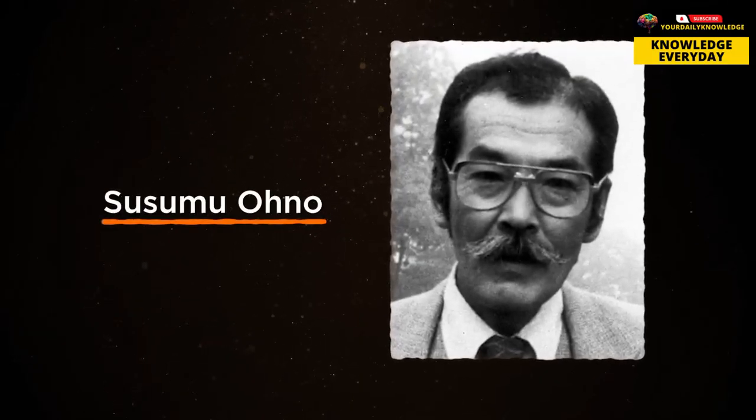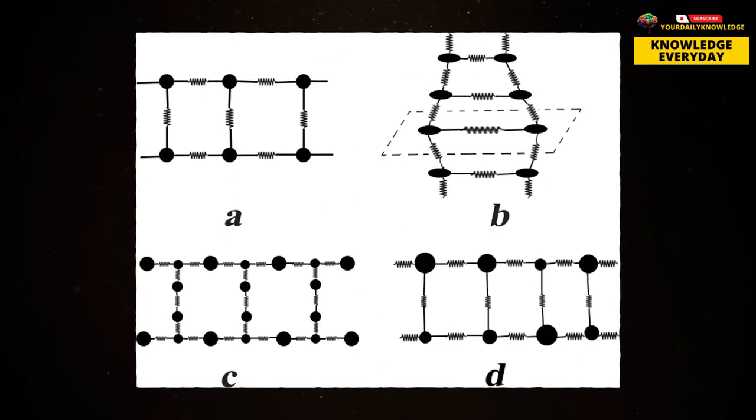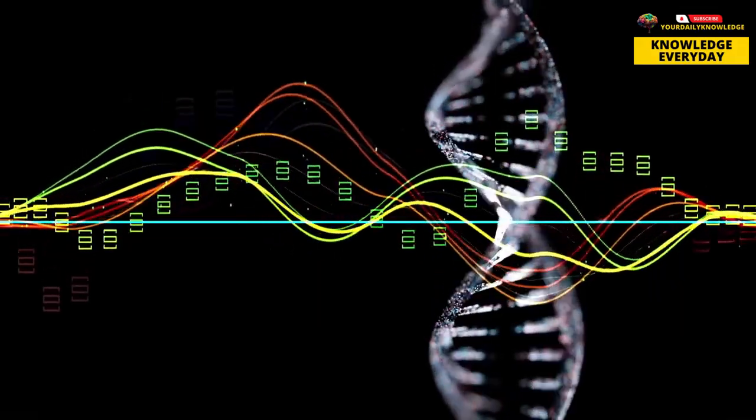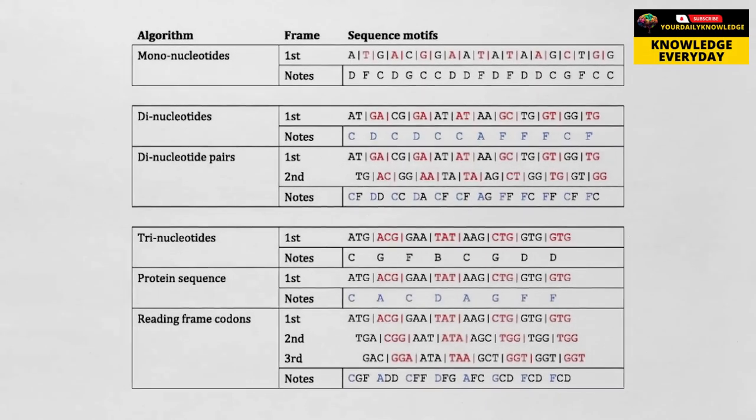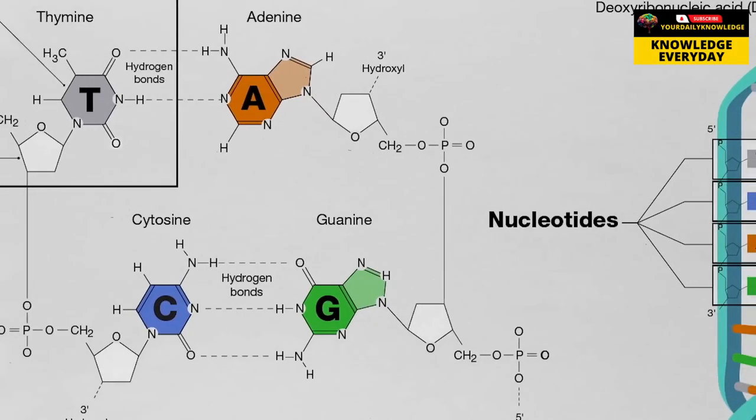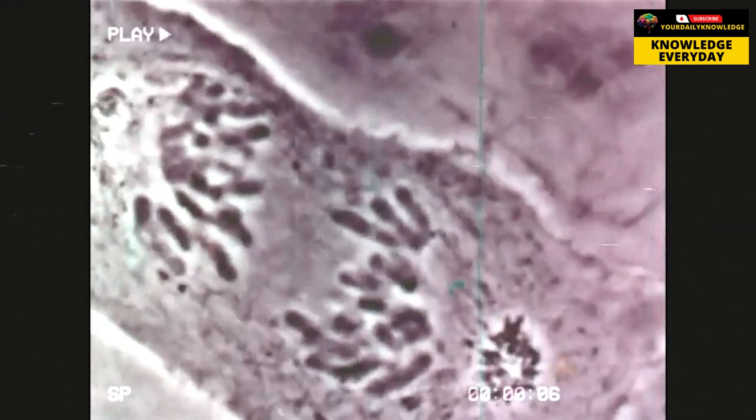Susumu Ono's groundbreaking research in translating DNA sequences into melodious compositions opened a door to a realm of unexplored possibilities. By associating specific musical notes with nucleotide bases, Ono revealed the inherent musicality encoded within our genetic blueprint. This discovery not only ignited fascination, but also prompted profound questions about the reciprocal relationship between DNA and music.